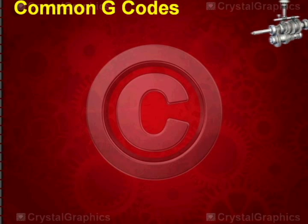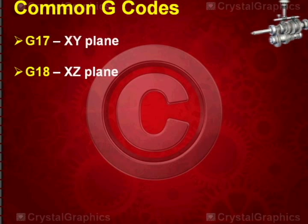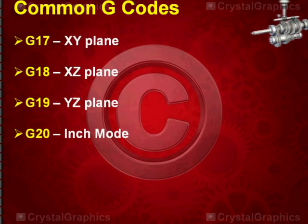Other common G codes are G17, which indicates XY plane, G18 indicates XZ plane, G19 indicates YZ plane. G20 indicates inch mode, and G21 indicates metric mode.